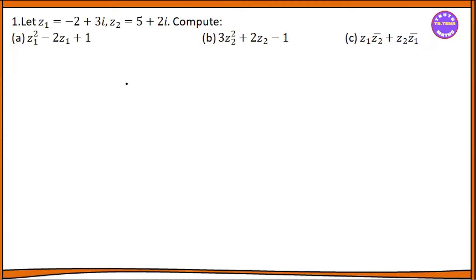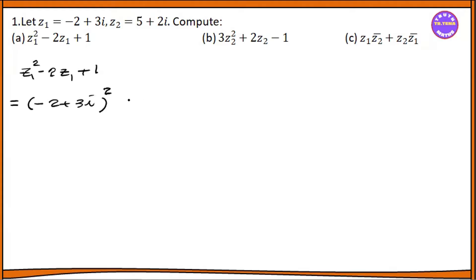The conjugate of a complex number — if we have a 1 plus 2 plus 1, equals 2 plus 3i plus 3i minus 2i. The whole square minus two into the one. Minus two plus 3i plus one. That's how we have the whole square.